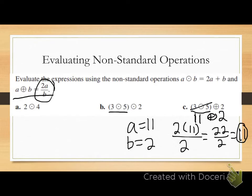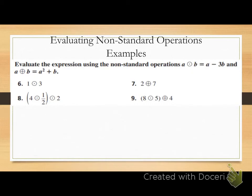Now, if you notice, b and c have the same numbers to start off with. But we got different answers, and that's just because the operations that we were using changed, so that therefore changed my answers. So let's look at our last set of examples.